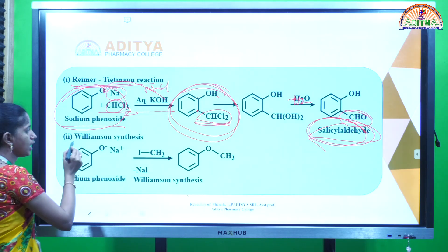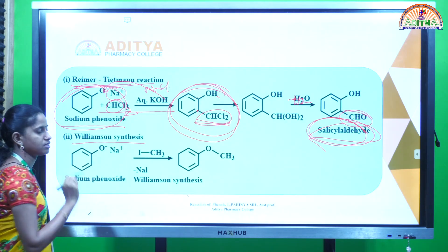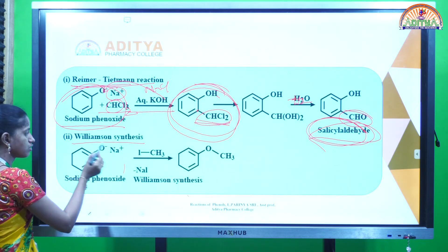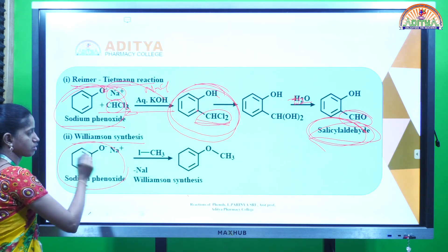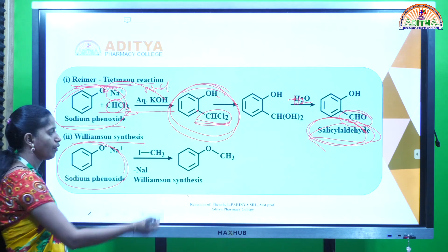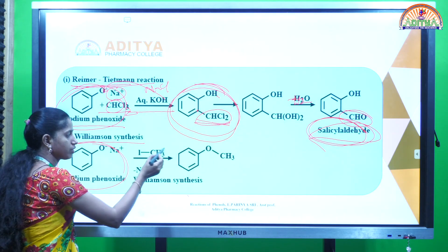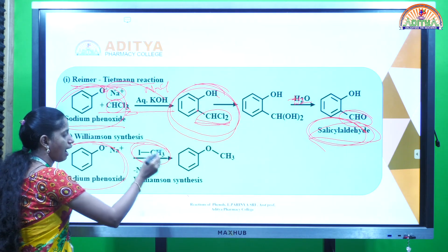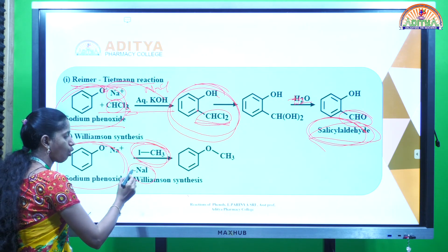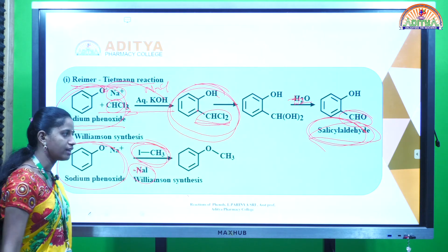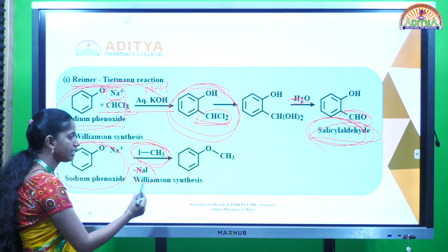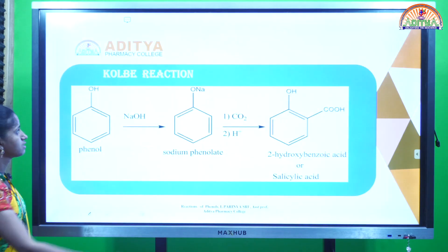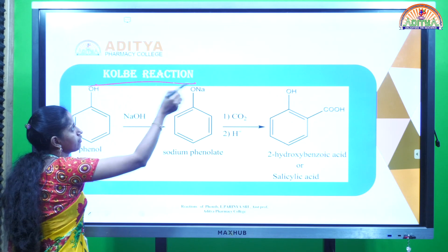Next is the Williamson synthesis. In this reaction, sodium phenoxide, when reacting with methyl iodide, and by the loss of one molecule of NaCl, is forming an ether.